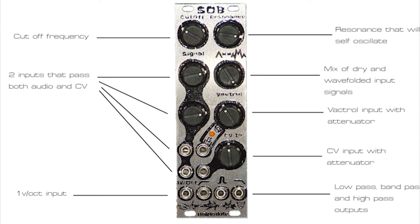It has a CV input to control the filter's cutoff with attenuation for the incoming CV. It's also got a Vactral input with attenuation, and finally a 1V per octave input. These three CV inputs all sum together before affecting the cutoff.